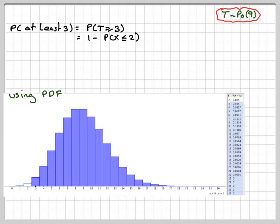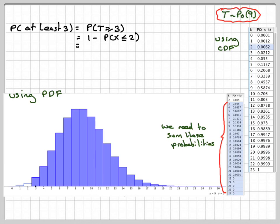Using the PDF we sum all those, it's rather a lot of work. Better to use the CDF and 1 minus this number here. It's 1 minus the probability that X is less than or equal to 2, which is 0.062. That gives an answer of 0.9938, which is 0.994 to 3 significant figures.